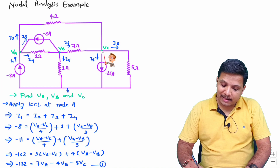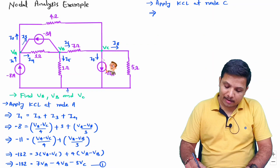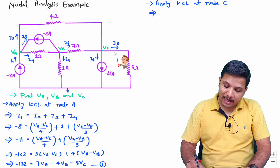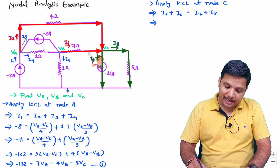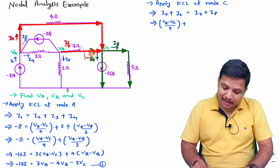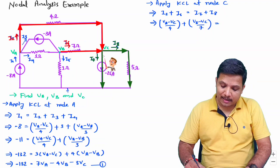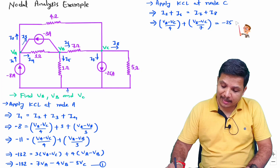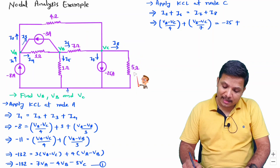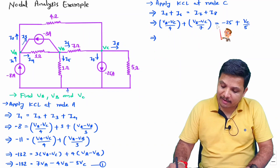Similarly, applying KCL at node C. At node C, entering currents are I6 and I2, and leaving currents are I7 and I8. So I2 plus I6 equals I7 plus I8. Substituting: I2 equals VA minus VC divided by 4, I6 equals VB minus VC divided by 7, I7 corresponds to current source minus 25, so I7 equals minus 25, and I8 equals VC divided by 5. Taking VC/5 to the other side gives minus VC/5.